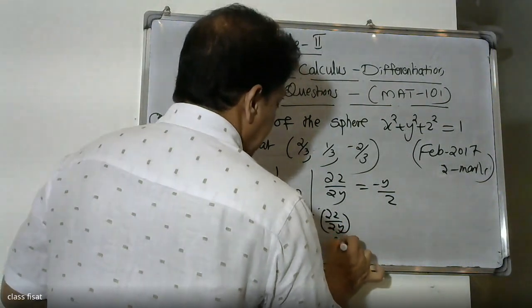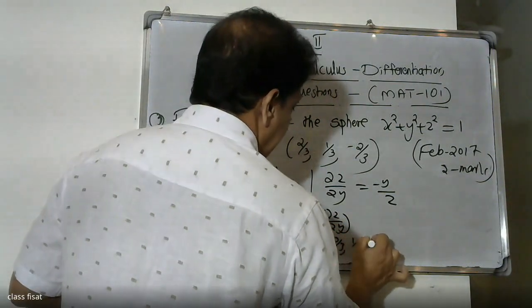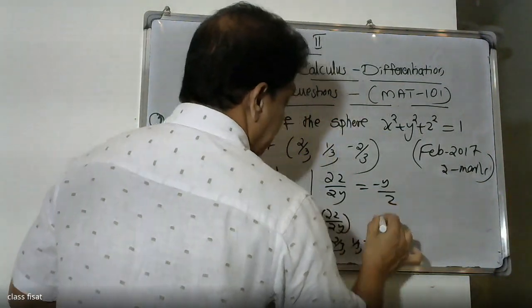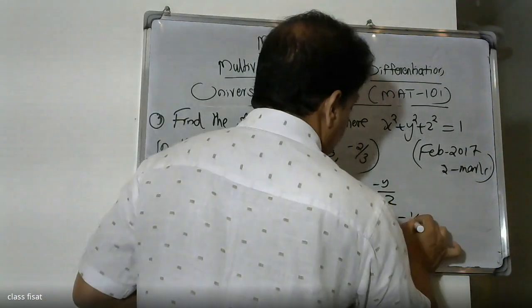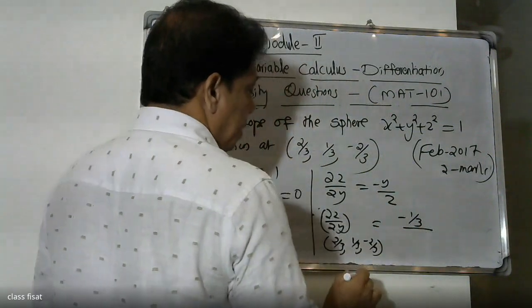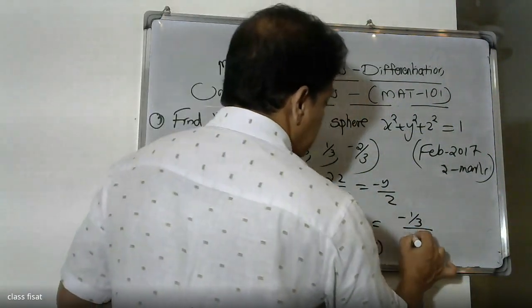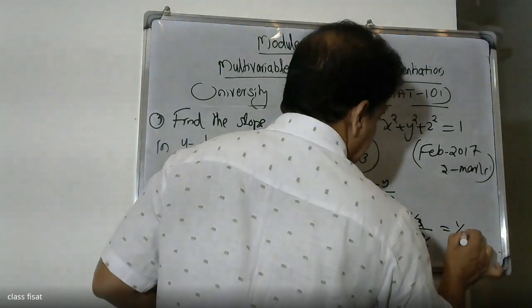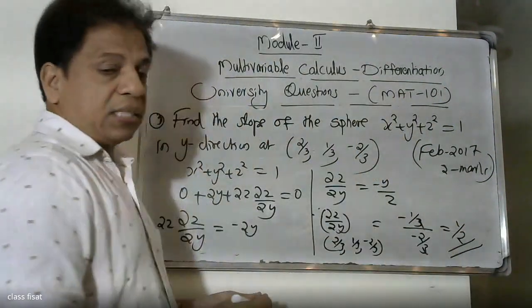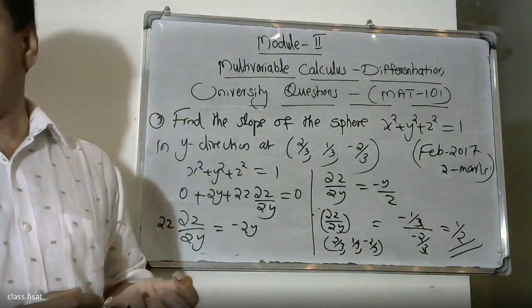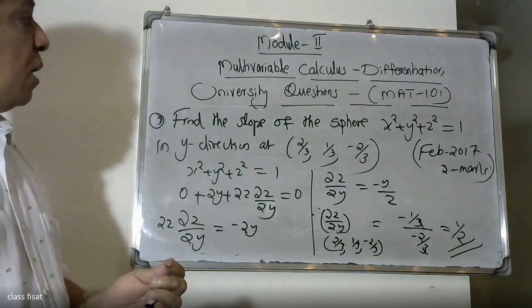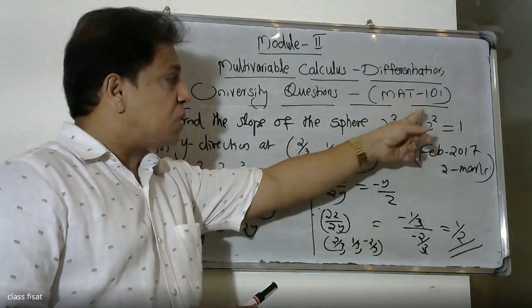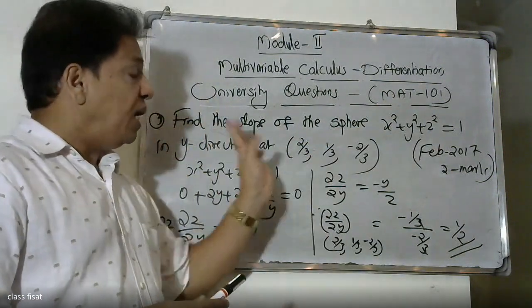Therefore dou z by dou y equals minus y by z. Substituting the point (2/3, 1/3, minus 2/3): y equals 1/3 and z equals minus 2/3.